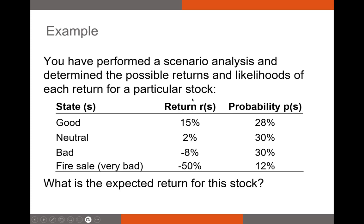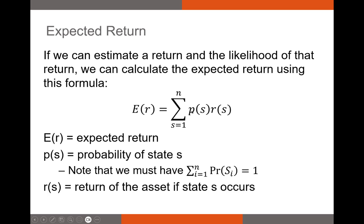Let's take a look at an example. You've performed a scenario analysis and you've determined the possible returns and likelihoods of a stock in various states of the economy. So a good state of the economy, neutral state, bad state, and a state we typically don't include in scenario analysis, a fire sale. Very bad. Everything must go. Obviously you can see the returns get progressively worse here, and we have the probability associated with each of these states. So what is the expected return for the stock?